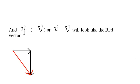And 3i plus negative 5j, or 3i - 5j, will look like the red vector. Here I'm adding the two vectors geometrically by putting this one at the head of this one, and then connecting the only available head and tail.